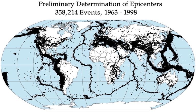Earthquakes are not only categorized by their magnitude but also by the place where they occur. The world is divided into 754 Flynn-Engdahl regions, based on political and geographical boundaries as well as seismic activity. More active zones are divided into smaller FE regions whereas less active zones belong to larger FE regions. Standard reporting of earthquakes includes its magnitude, date and time of occurrence, geographic coordinates of its epicenter, depth of the epicenter, geographical region, distances to population centers, location uncertainty, and a unique event ID.